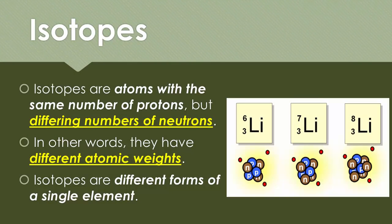So what is an isotope? Isotopes are atoms with the same number of protons — each element has a very specific number of protons as we said in previous videos — but they differ in the number of neutrons. If you look at lithium on the right of the screen, you'll see three different lithiums. They all have the same atomic number, so the same number of protons, same number of electrons, but they have a different mass, and the different mass is due to the different number of neutrons.